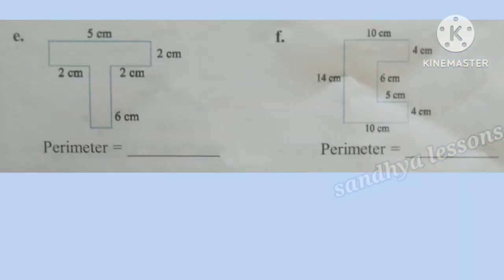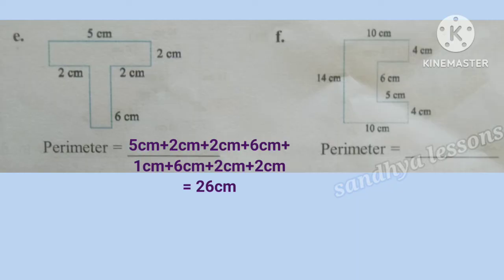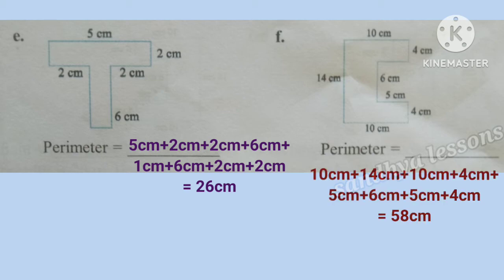E picture is a T shape with sides 5 cm, 2 cm, 2 cm, 2 cm, and 6 cm. Perimeter equals 5 cm plus 2 cm plus 2 cm plus 6 cm plus 1 cm plus 6 cm plus 2 cm plus 2 cm. By adding all the sides, we get 26 cm. Therefore, perimeter equals 26 cm. F picture: by adding all the sides, perimeter equals 58 cm.